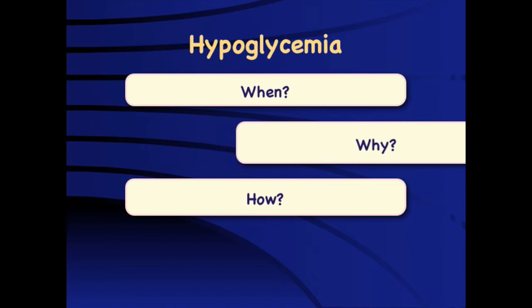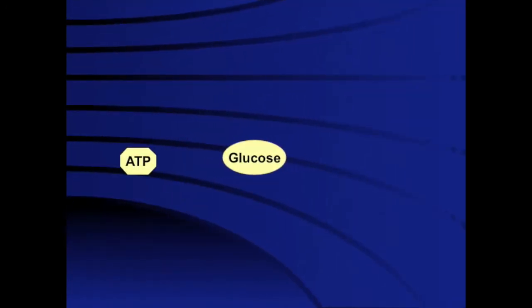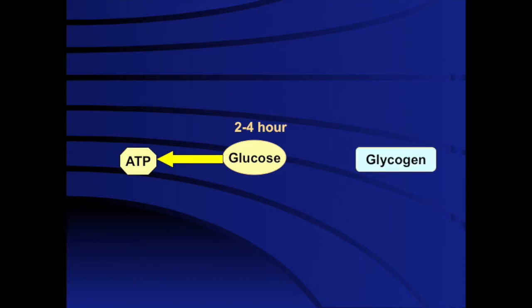Why does hypoglycemia happen? We need an understanding of physiology. Glucose is the most readily available source of energy in the body, and one of the important sources brain cells use. The usual blood glucose stores provide cover for around two to four hours. So if we have regular intake on a two-to-four-hourly basis, there would be no hypoglycemia even if all other mechanisms like glycogenolysis or gluconeogenesis are hampered. This is why newborns fed every two to four hours typically do not manifest metabolic problems.